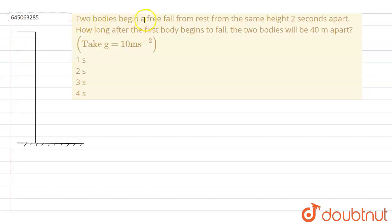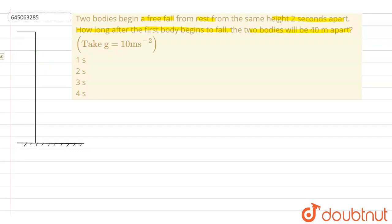Hi everyone. Our question is: two bodies begin a free fall from rest from the same height, two seconds apart. So how long after the first body begins to fall will the two bodies be 40 metres apart? Let us understand the physicality of the problem first. Suppose there are two balls which are dropped from a roof.